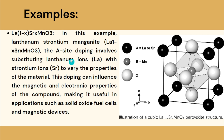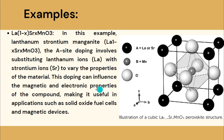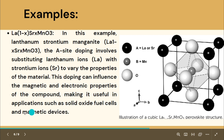For example, in lanthanum strontium manganate — La₁₋ₓSrₓMnO₃ — A-site doping involves substituting lanthanum ions with strontium ions to vary the properties of the material. We substitute lanthanum with strontium in order to improve or change the properties. This doping influences the magnetic and electrical properties of the compound, making it useful in applications such as solid oxide fuel cells and magnetic devices.